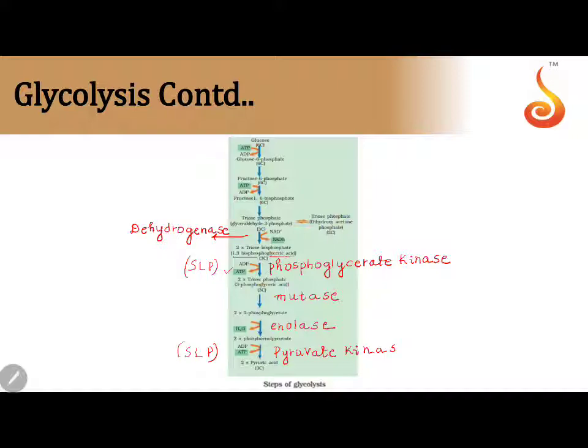We have 2 phosphate additions to the substrate and 2 phosphates removed from the substrate to form ATP in glycolysis. In all these 4 steps the enzyme is kinase, and we name it along with the substrate.